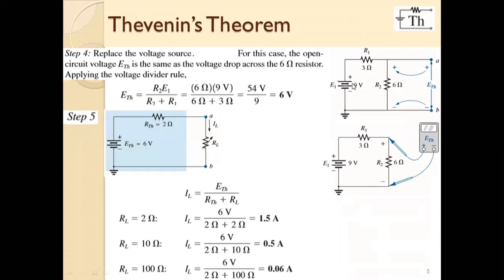Step number four: place the voltage and current sources back on their original positions and then calculate the voltage between the two terminals, that is between A and B. In this network, when the voltage source is placed on its original position, the voltage from A to B appears across R2. So what we need to do is calculate the voltage across R2, which is called ETH. For such a network, we can use the voltage divider rule to calculate this, or use any convenient method for any situation. You find the ETH value; in the previous step you calculated the RTH value.